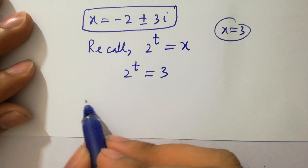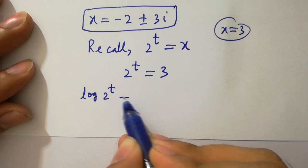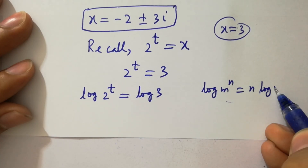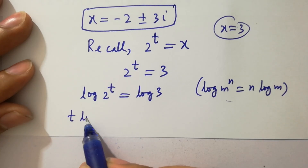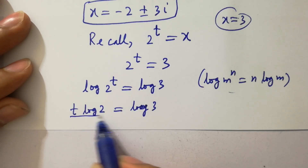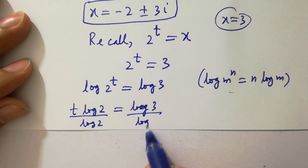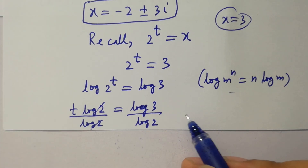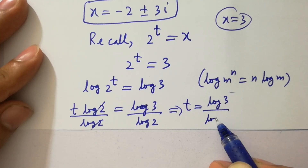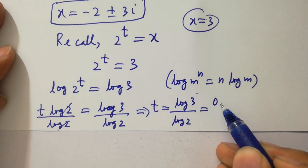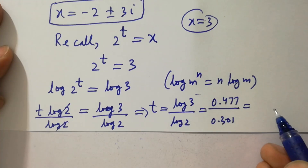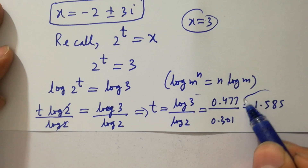To find t, we take log on both sides: log of 2 to the power t equals log 3. Since log m to the power n equals n log m, we get t log 2 equals log 3, so t equals log 3 over log 2. With log 3 equals 0.477 and log 2 equals 0.301, we get t approximately equals 1.585.